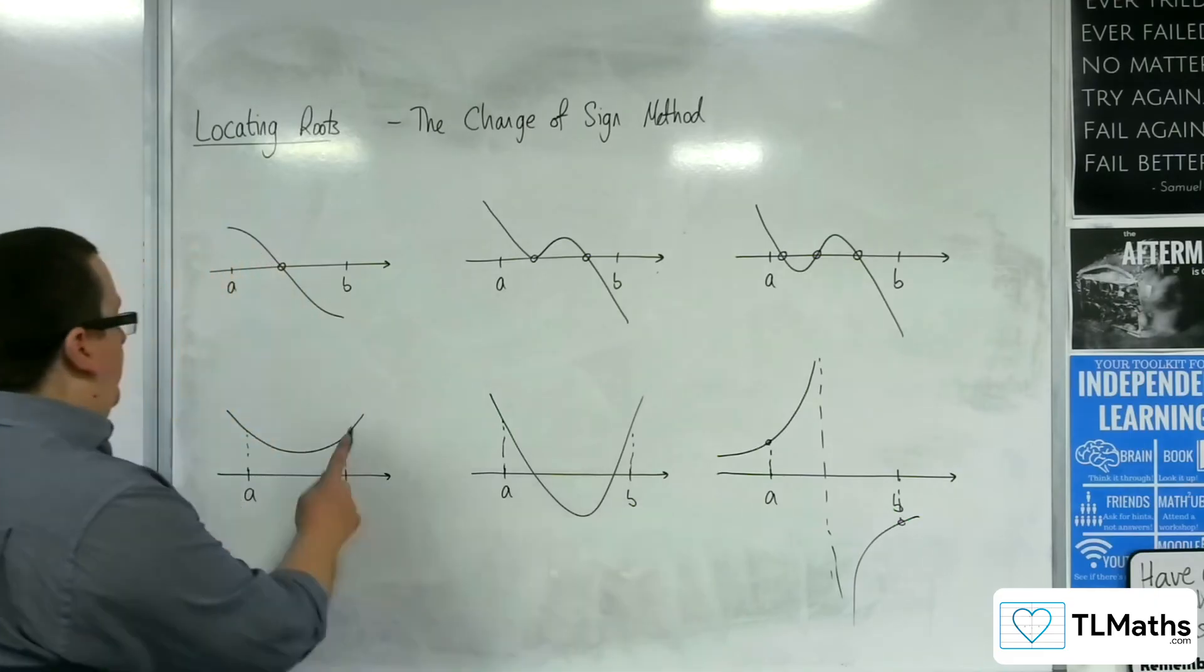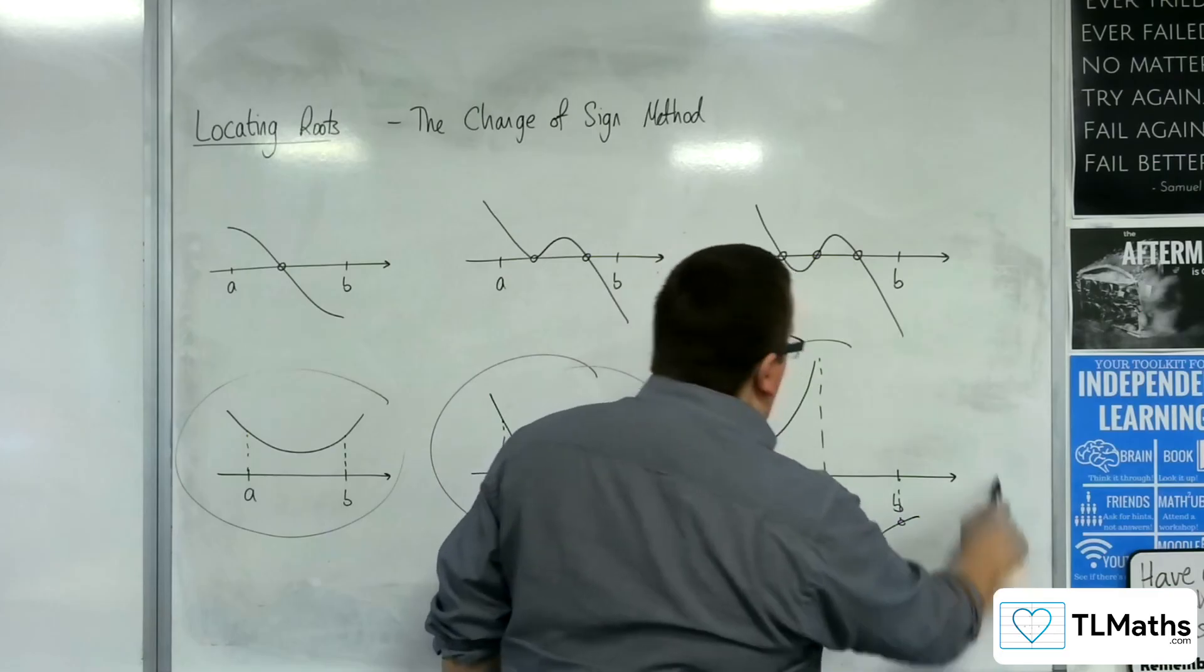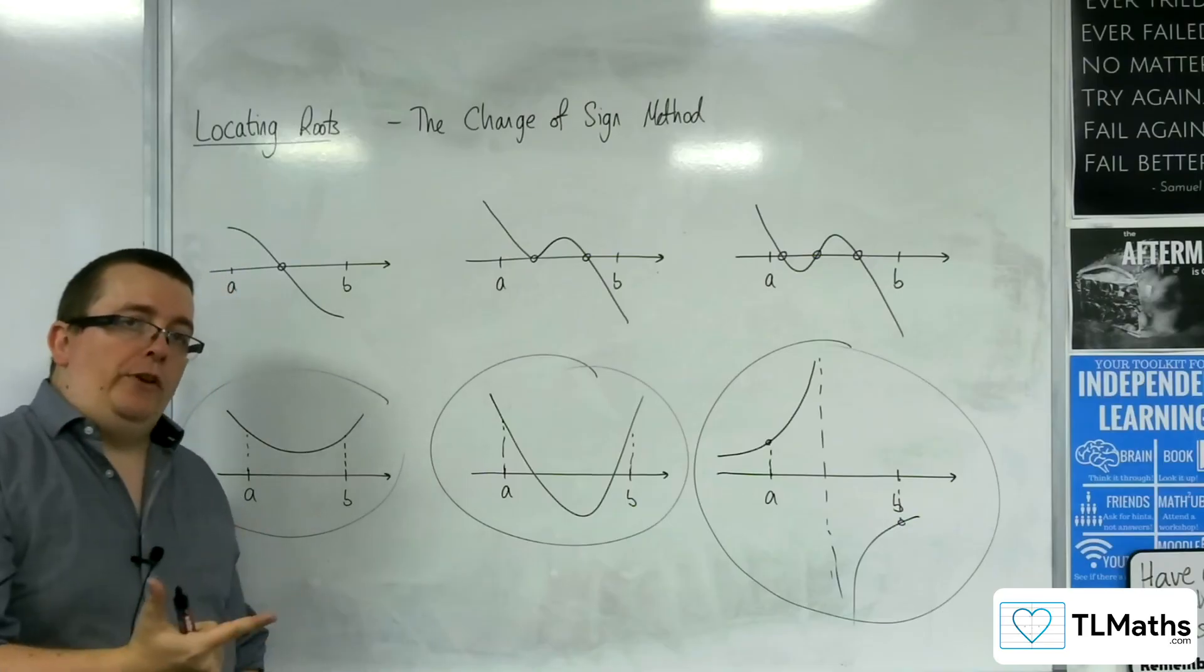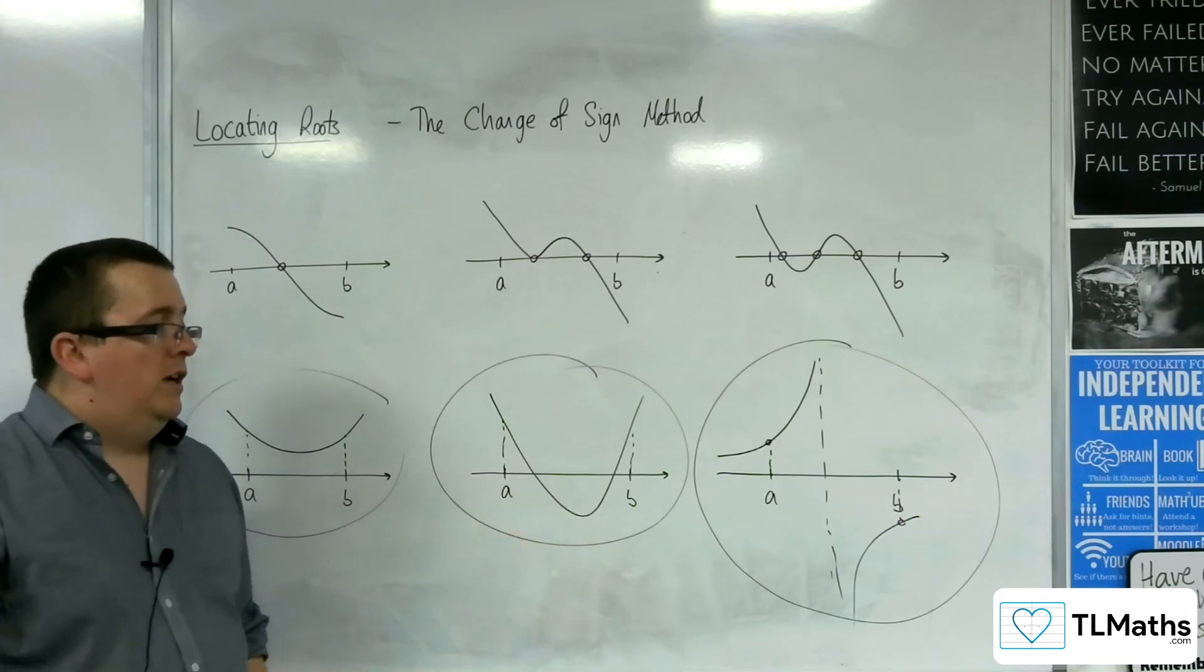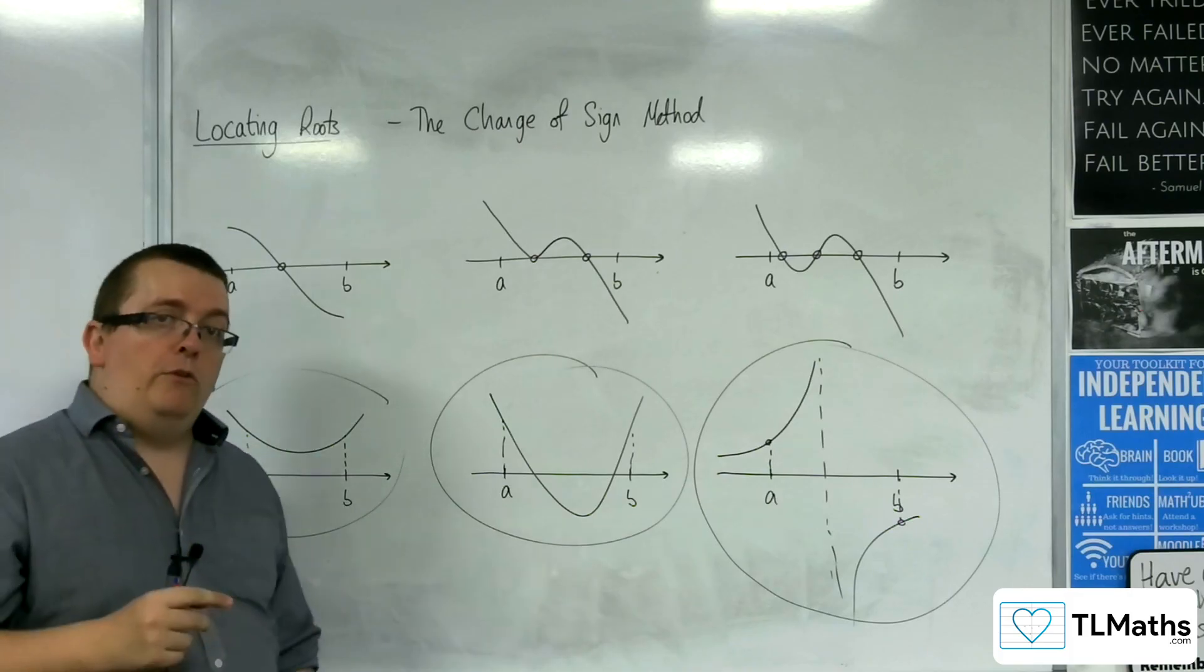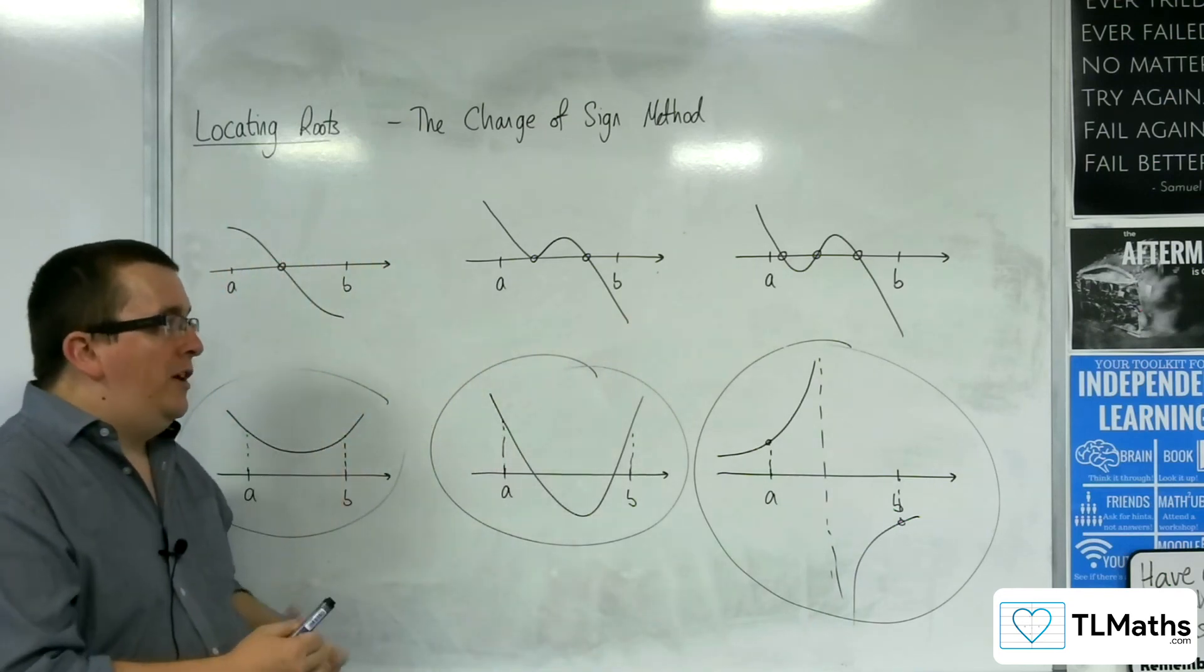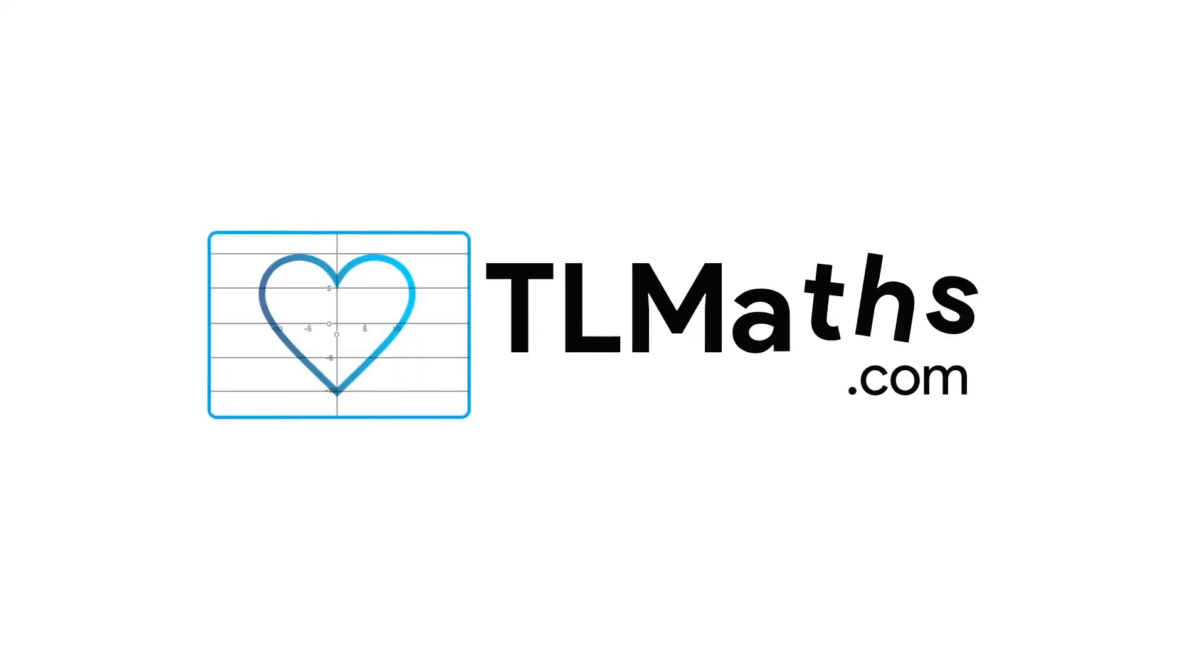So these cases here are showing you that if you don't have both of those bits covered, where you've got the continuity and the change of sign, you could have no roots. You could have more than one root. You just don't know. But if you have both of those facts covered, then you have at least one. And that's how the change of sign method can be implemented.